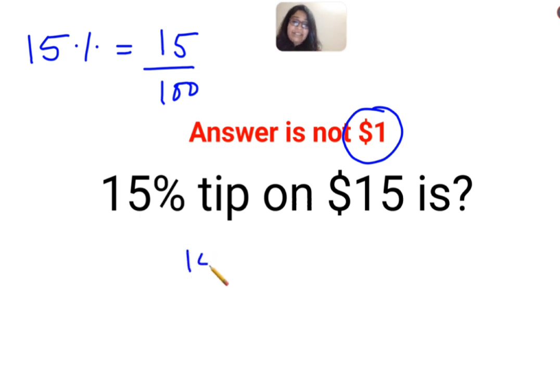Okay, so 15 upon 100 on or of, it's one and the same thing. Means you need to multiply it with the next number which is 15.